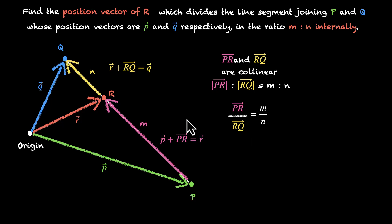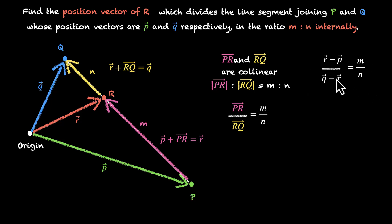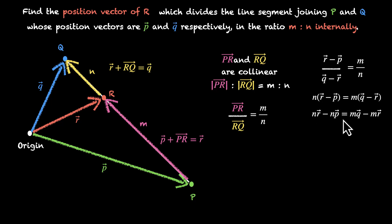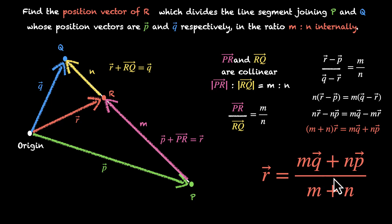Now let's eliminate pr vector and rq vector using these two equations. We have pr vector equals r vector minus p vector, and rq vector equals q vector minus r vector. Their ratio equals m by n. Cross multiplying: n times (r vector minus p vector) equals m times (q vector minus r vector), giving nr minus np equals mq minus mr. Bringing all r's to one side: (m plus n) r vector equals mq vector plus np vector. Dividing by m plus n: r vector equals (mq vector plus np vector) divided by (m plus n). This is the section formula for internal division.